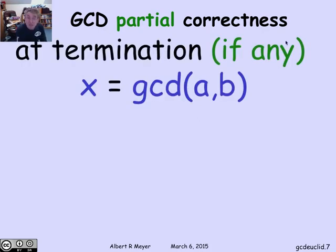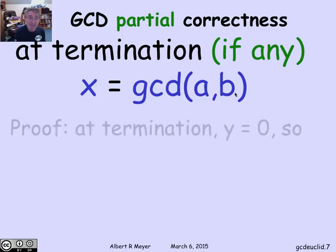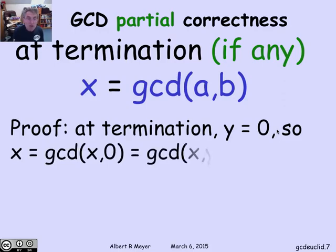The claim is that if this program terminates, and we haven't determined that it does yet, but at termination, if any, I claim that the GCD of a and b is left in register x. At termination, what we know is that y is 0. That's the only way that this procedure stops because otherwise the transition rule is applicable.